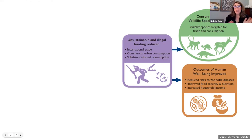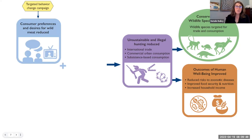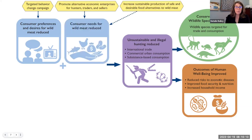We have four key results that can help lead us to threat reduction. First is addressing consumer preferences and desires for wild meat — the blue squares are the key results, and the yellow hexagons are the approaches we take to get there. Behavior change campaigns are an important part of reducing consumer preferences. The second key result addresses consumer need for wild meat — there is an economic need and a nutritional need. Does it have to be wild meat that supplies that? Not necessarily. Strategic approaches related to increasing alternatives for income, food, and nutrition are relevant here.